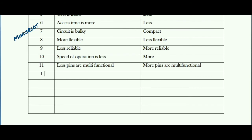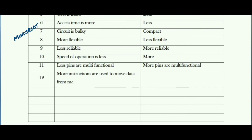In case of microprocessor, more number of instructions are used to move data between CPU and memory, whereas in case of microcontroller, less number of instructions are used to move data between memory and CPU. Also, direct boolean operations like bitwise operations are not possible in case of microprocessor, whereas in case of microcontroller direct boolean operations are possible.